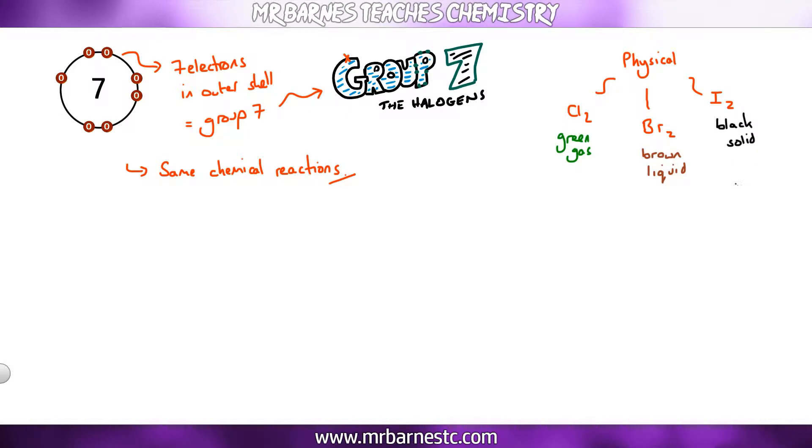Now hopefully you can see from that the trend changes as you go down the group. So we've gone from a gas to a solid, therefore the melting points get higher as you go down the group. So astatine is still going to be a solid and fluorine is going to be a gas.